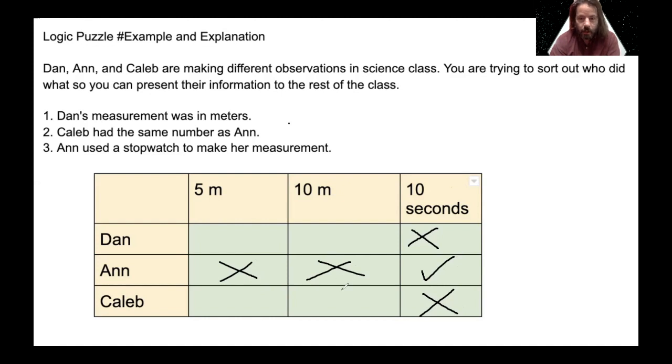All right. Now this is actually pretty easy because Ann used a stopwatch, she got 10 seconds. Caleb had the same number as Ann, so he had 10 meters. So we can mark the X's here. And then we can see that Dan has only one option to check. So then we could go and we could actually fill out the answer here.